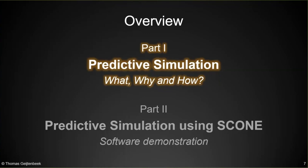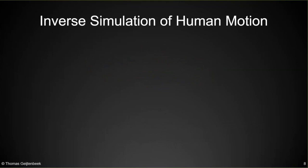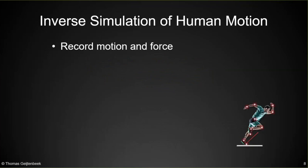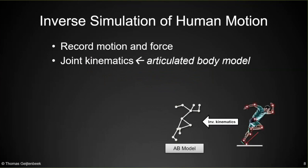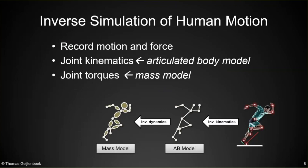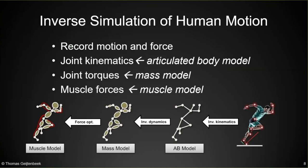Before we look at predictive simulation, let's first look at inverse simulation of human motion. This is a common tool that allows researchers to estimate quantities of recorded motion that are not directly observable, such as muscle force or joint torque. With inverse simulation, you start by recording motion data and force data. Next, you use an articulated body model and inverse kinematics to derive joint angles and velocities. After that, you use a mass model and inverse dynamics to derive joint torques. Finally, you use a muscle model and some optimization to solve for the muscle redundancy problem to estimate muscle forces.